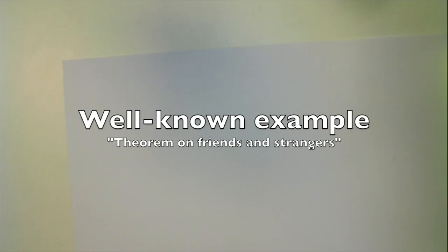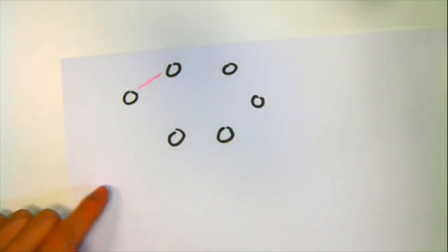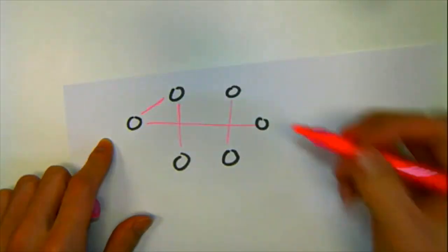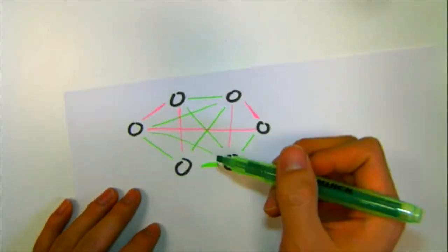Let's look at a well-known example that we actually touched on in our previous video. There are six people at a birthday party. Each pair of people is either friends or enemies. It doesn't really matter, but let's say people are friends by drawing a pink line between them,